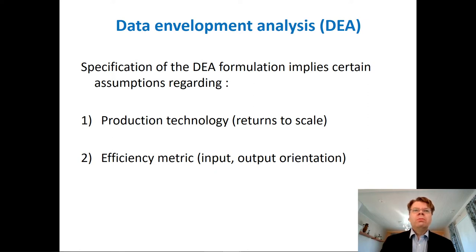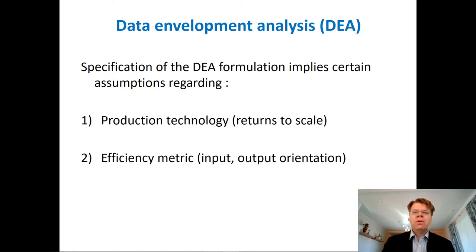We observed before that to apply DEA, the user must make some specification about the returns to scale and perhaps more generally something about the production technology. Another choice that the user needs to make is the choice of the input-oriented, output-oriented, or some other orientation — basically what kind of efficiency metric is used for the performance analysis.